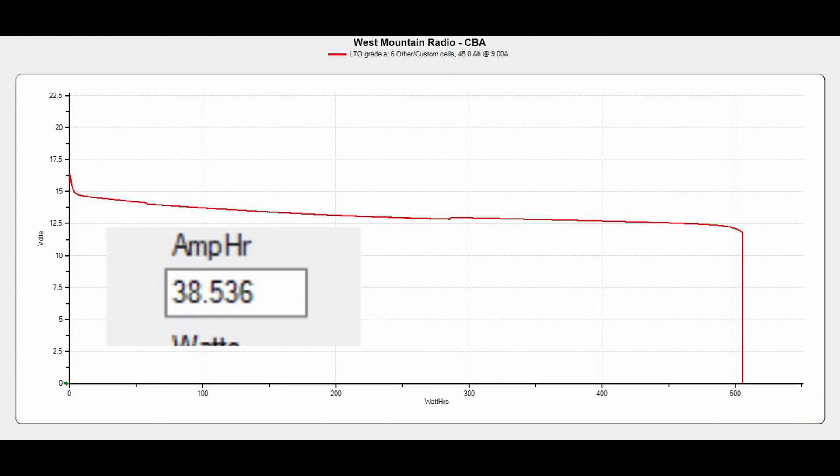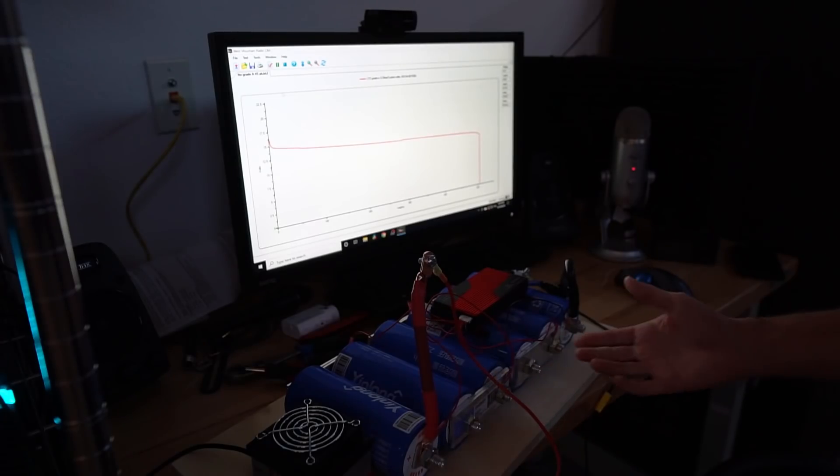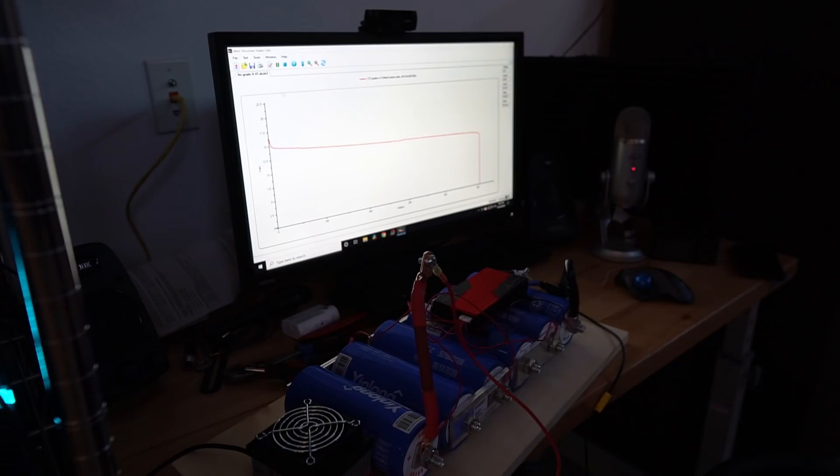Uh-oh. We only pulled 38 amp hours. That is not good. We're at 2.1 volts per cell and everything looks fine. So that's not good. These might be grade B cells.